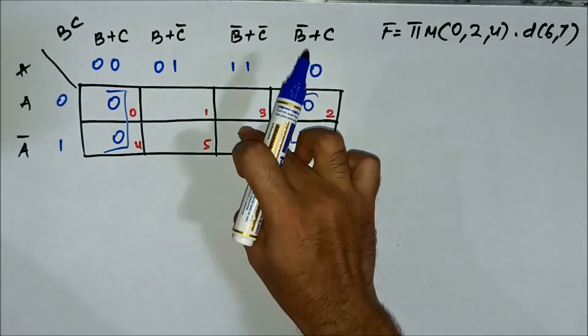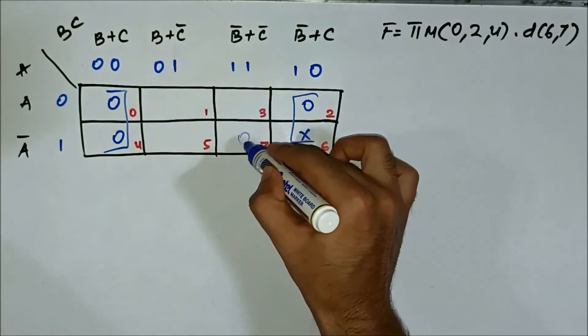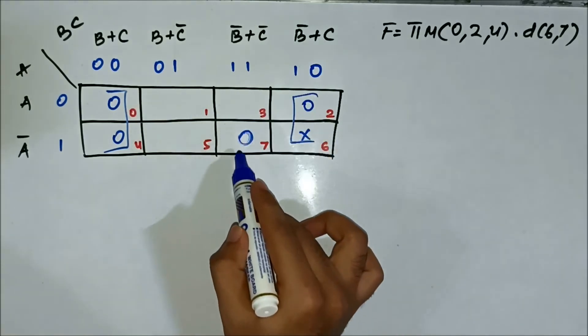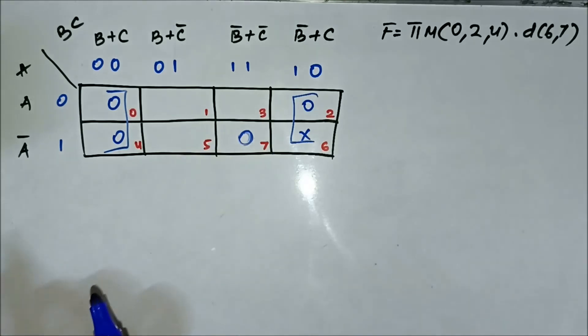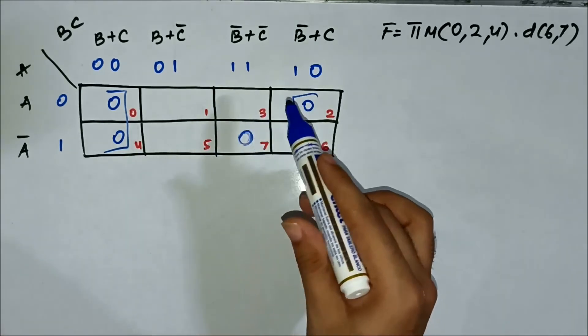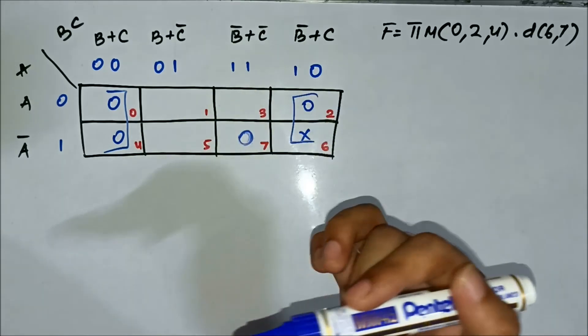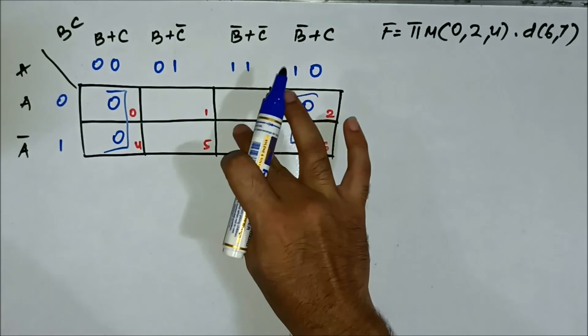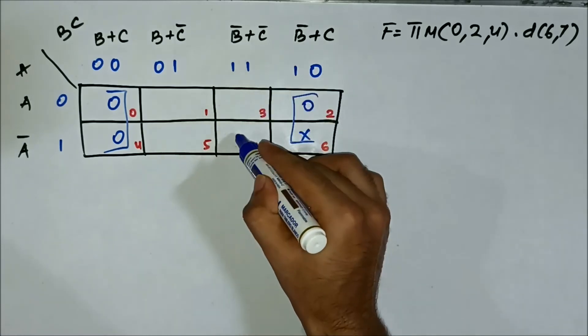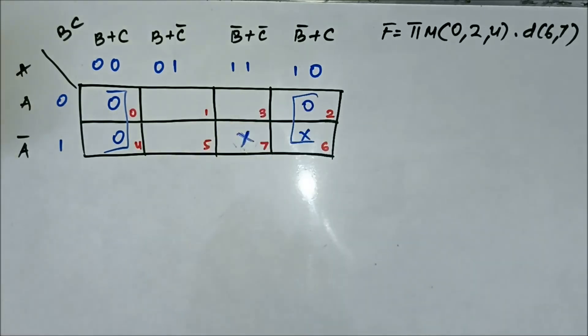But here if there would have been a 0 then we would have formed a pair. It would have been necessary to form a pair because we cannot leave behind a 0-marked cell for POS or a 1-marked cell for SOP. But here as it is an x-marked cell, a don't care cell, so there is no need to form a group.